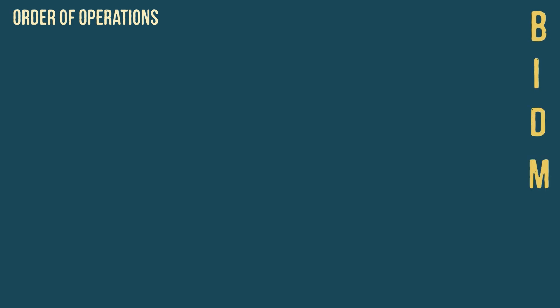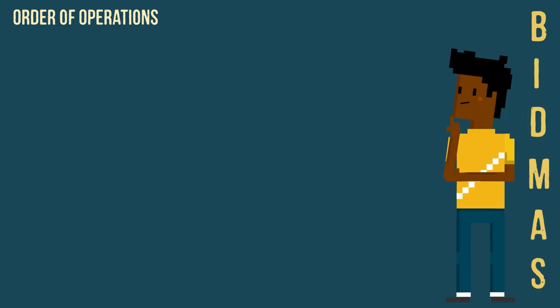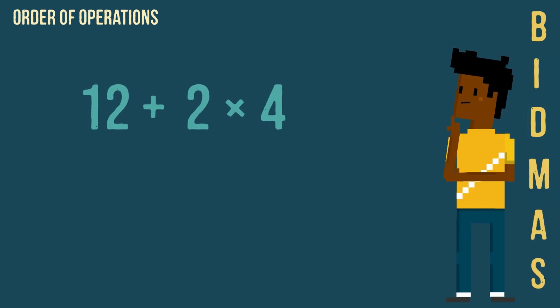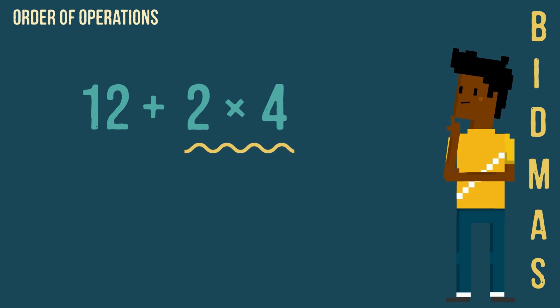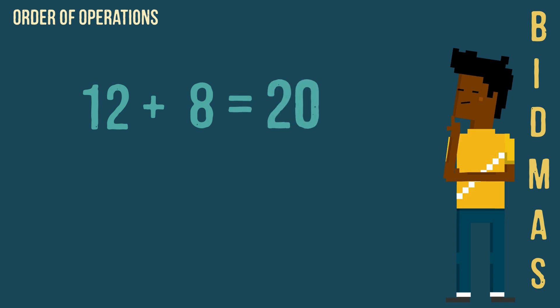So let's look at an example. Here there are no brackets, no indices, and no division. But there is multiplication, so we calculate this first. Next we carry out the addition to solve the question.